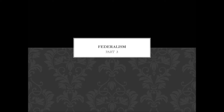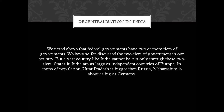Good morning children. In today's class we're going to continue with the lesson federalism from civics. The topic is decentralization in India. We noted that federal governments have two or more tiers. A vast country like India cannot be run only through two tiers — states in India are as large as independent countries of Europe. Uttar Pradesh is bigger than Russia; Maharashtra is about as big as Germany.